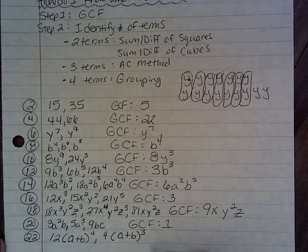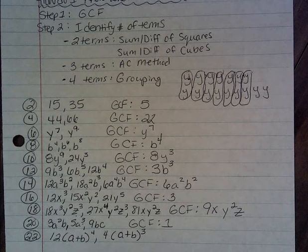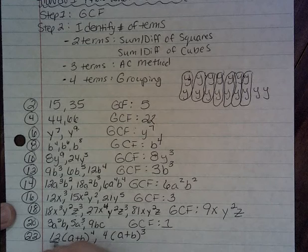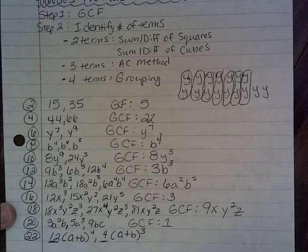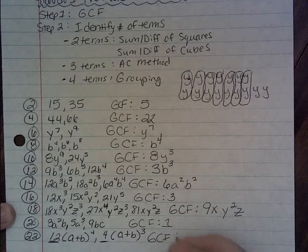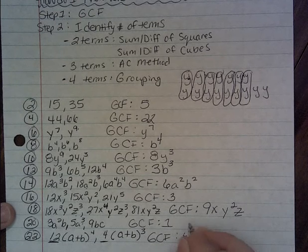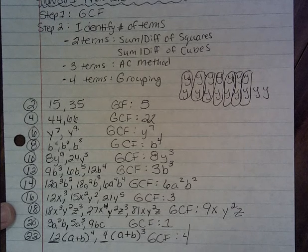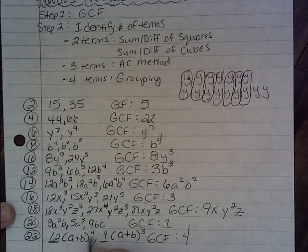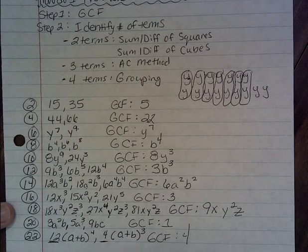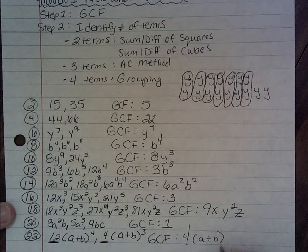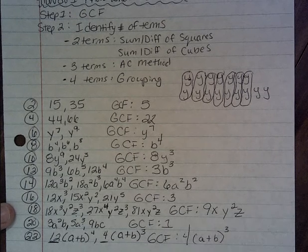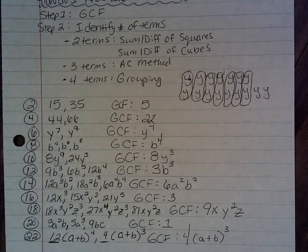On number 22, we've got to treat this problem as two different parts. I've got a 12 and a 4 — the biggest number that goes into both is 4. Then I've got (a plus b) to the 4th and (a plus b) to the 3rd, so the biggest number of (a plus b)'s I can take out is 3. So the greatest common factor is 4(a plus b) to the 3rd.